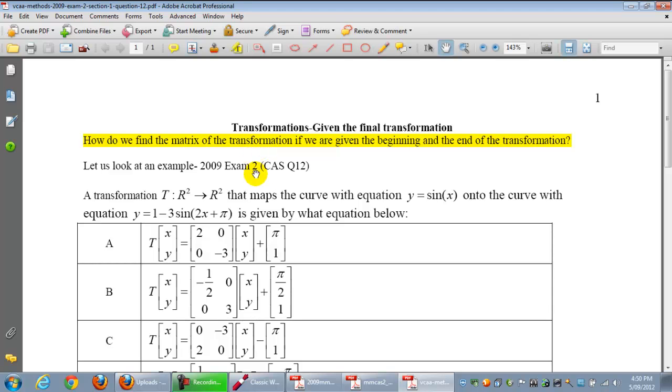What is the question asking? It's saying a transformation T is mapping this curve y = sin(x) onto a curve with this equation. So we're given the final transformation, the final equation. We've got the initial equation and now we want to know what is that transformation that's mapping sin(x) to this.